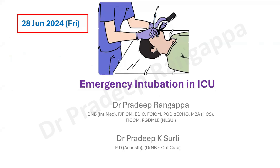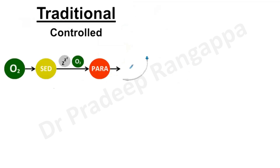Emergency intubation in ICU is a little different to routine intubations that happen in the OT. When we talk about emergency intubation in ICU, there are four sorts of situations. The common one we tend to adopt is where we pre-oxygenate the patient, induce with sedatives and analgesics, ensure adequate oxygenation, then administer succinylcholine and intubate. This is the traditional controlled sort of intubation.